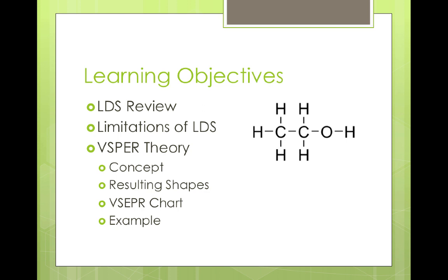Let's start with a quick list of the learning objectives for this video. We'll begin with a quick review of what a Lewis dot structure is, then go into the limitations of Lewis dot structures. We'll discuss what VSEPR theory is and how it works, talk about the resulting 3D shapes, organize that information into a VSEPR chart, and end with some example problems showing how to use VSEPR theory to create three-dimensional shapes of molecules.